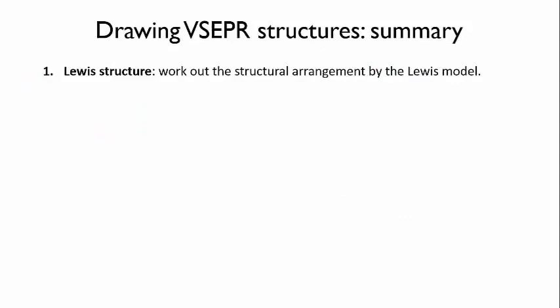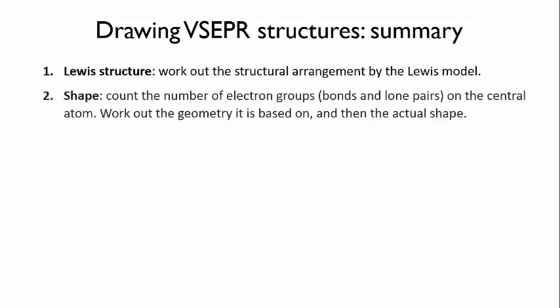Let's summarize. When you're drawing a VSEPR structure, first draw out its Lewis structure—that's really important. Second, work out its shape. Count the number of electron groups, bonds, and lone pairs on the central atom. Work out the geometry it's based on and then the actual shape.